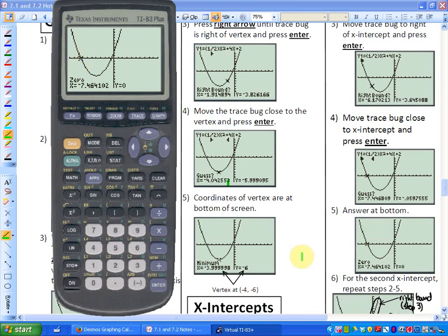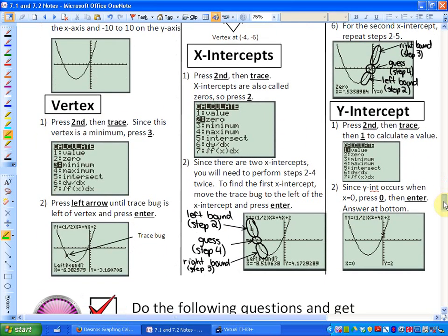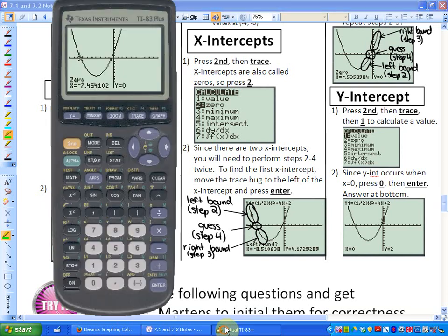Now your other x-intercept you're going to have to repeat, as you can see at the bottom of your second column in your study guide. Repeat step 2 here. So I'm going to press 2nd, and then trace, and then 2 again. And to find this x-intercept to the right, as you can see on the screen here, the left bound is below that x-intercept, because that's a point that's to the left of the x-intercept. So here's to the left of that x-intercept, I'm going to hit enter.